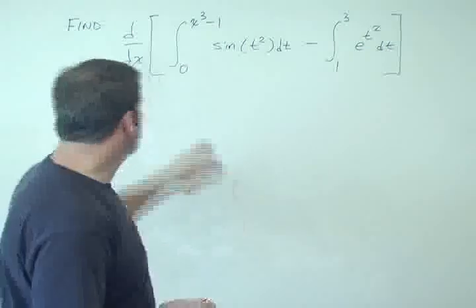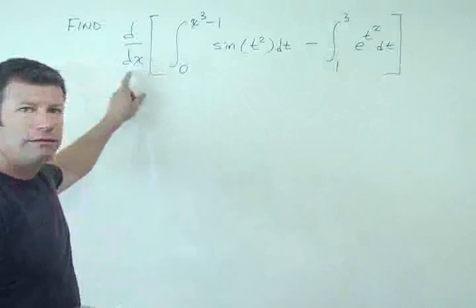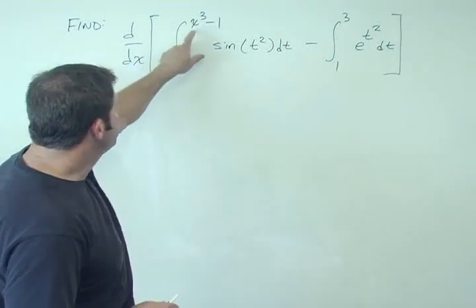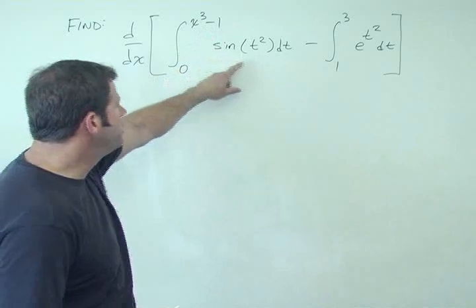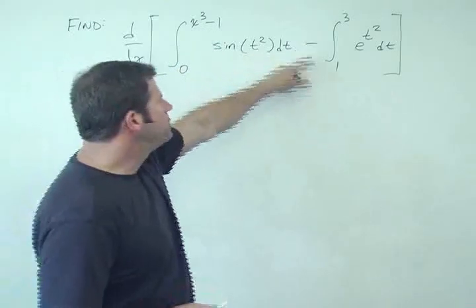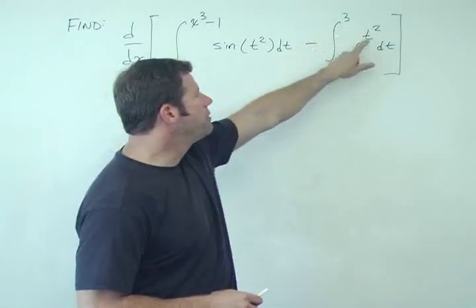This one, we have d/dx of this entire thing: the integral from 0 to x³ - 1 of sin(t²) dt minus the integral from 1 to 3 of e^(t²) dt.